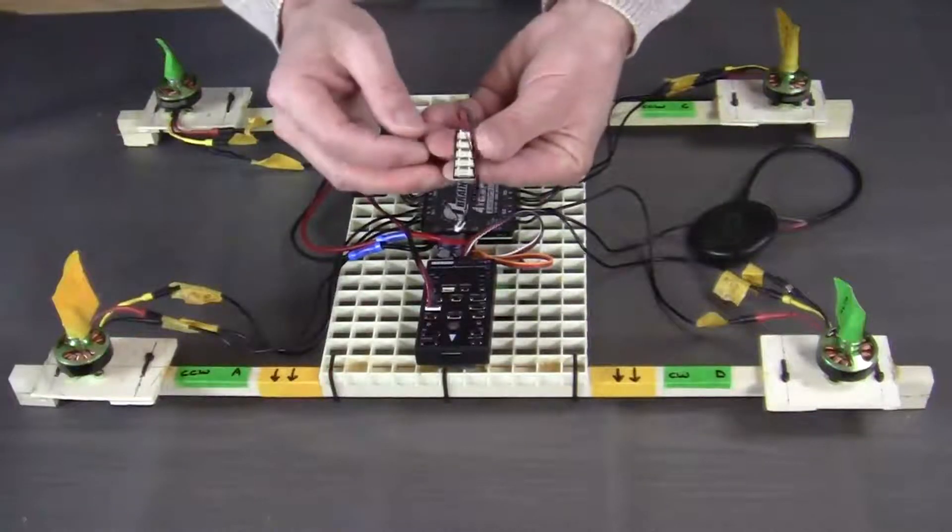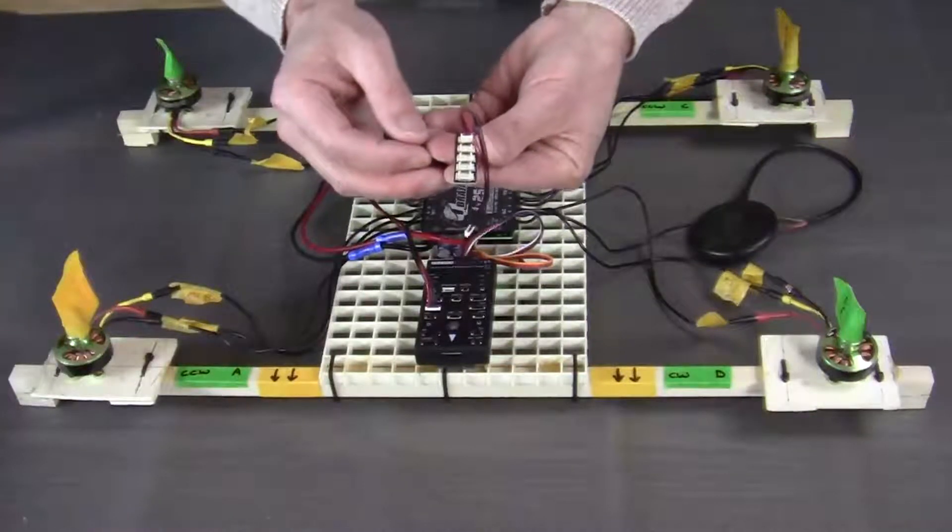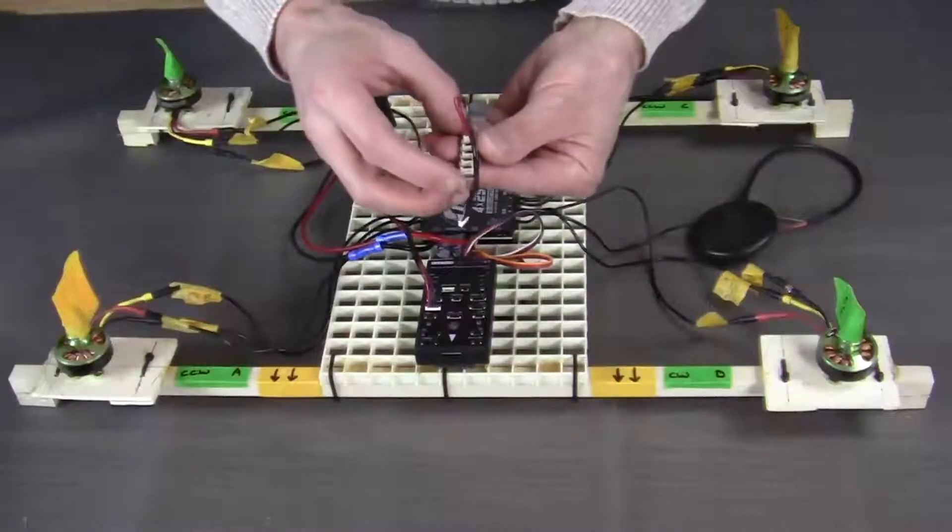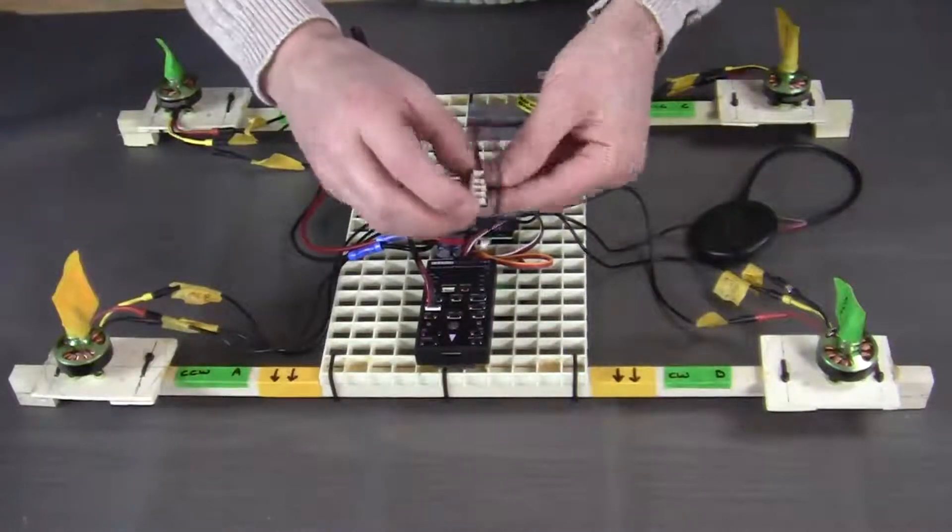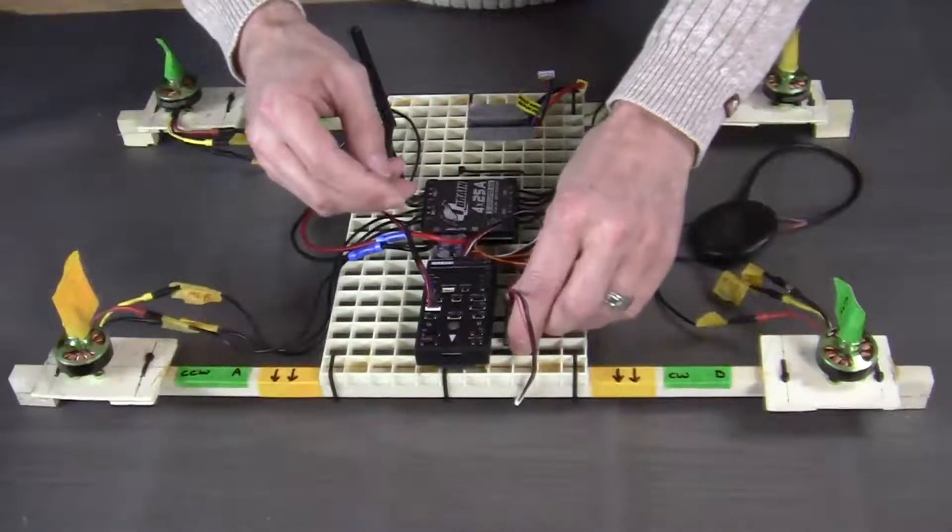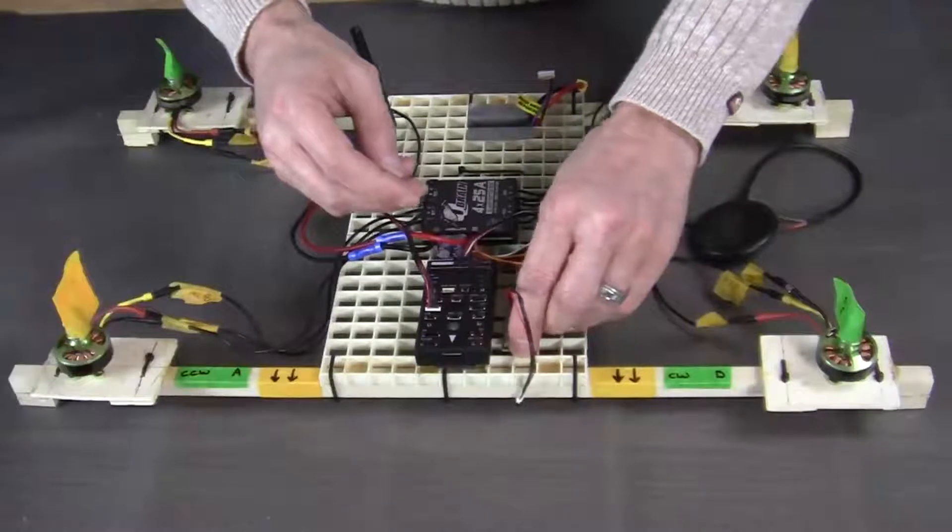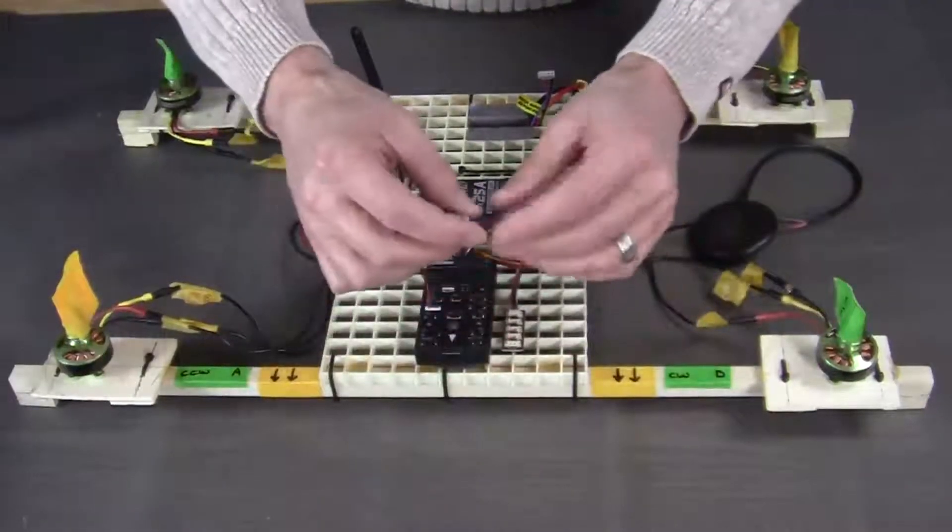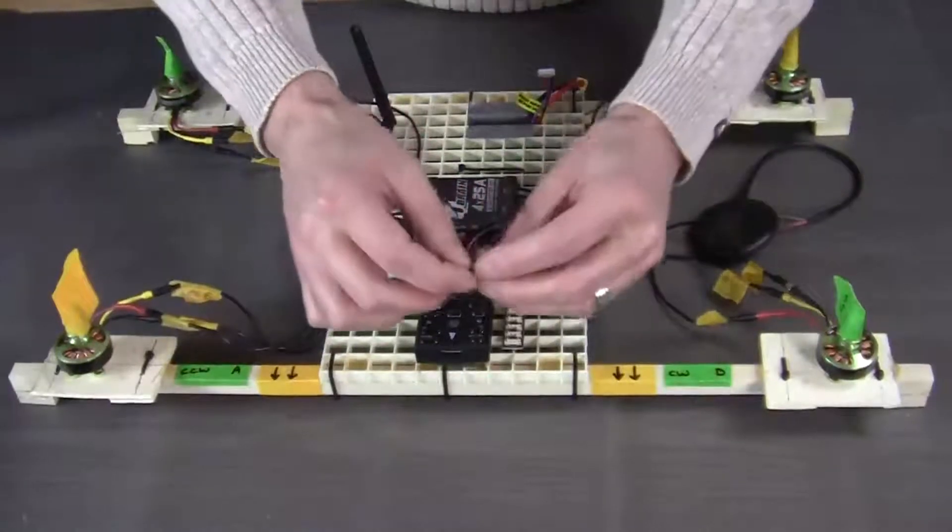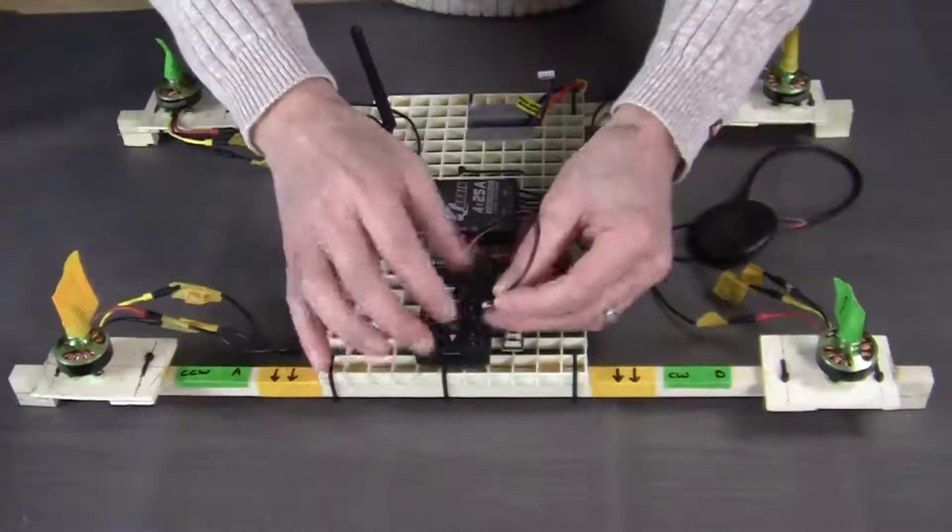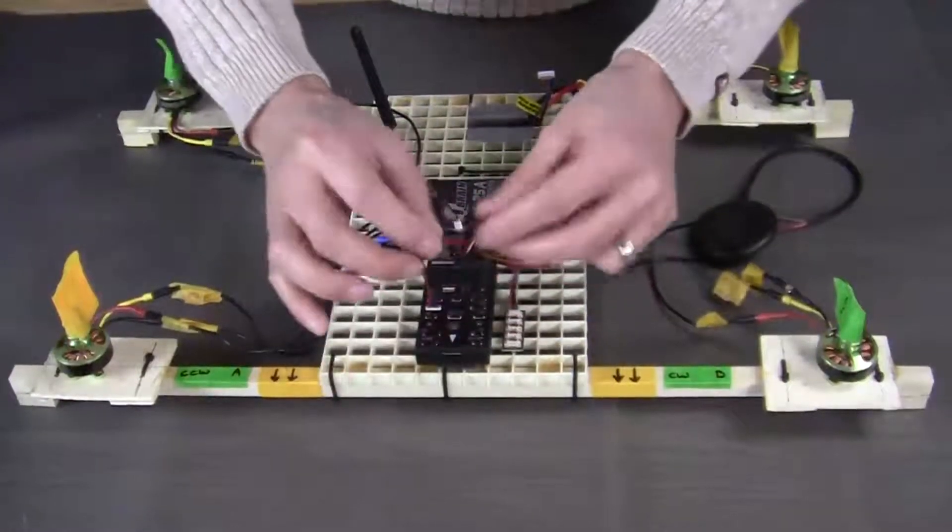but then we have all of these other little sockets where we can add additional components like LEDs and first-person video or video recording equipment. So we're just going to position that there and the opposite end of this connector wire will go into the I2C socket on the PixHawk.